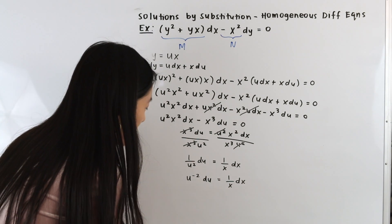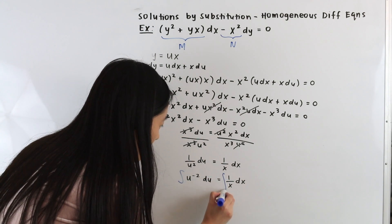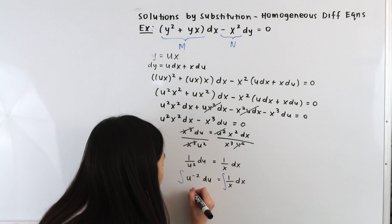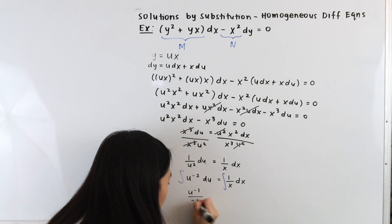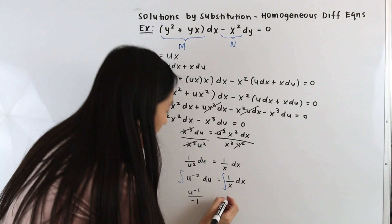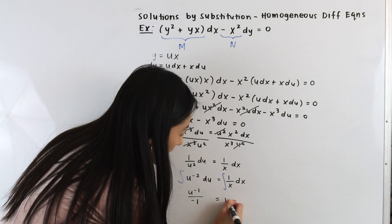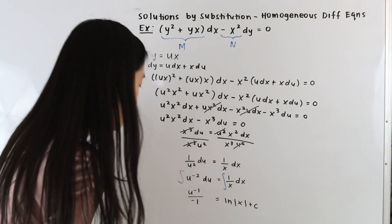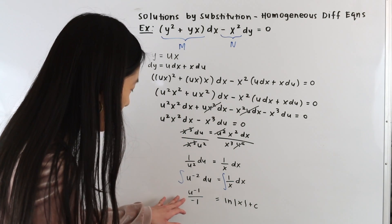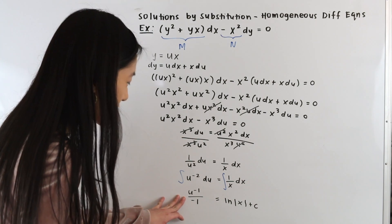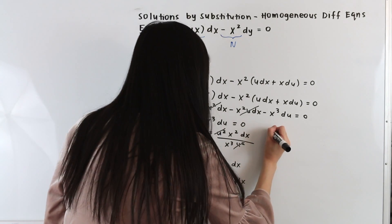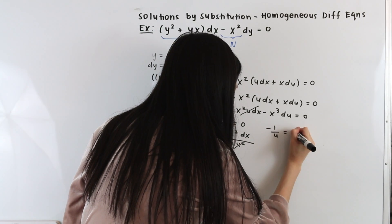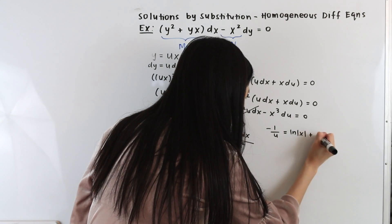Now we integrate both sides. On the left-hand side we get u to the negative 1 over negative 1, and on the right-hand side we get ln of the absolute value of x plus C. We can rewrite this as: negative 1 over u equals the natural log of the absolute value of x plus C.